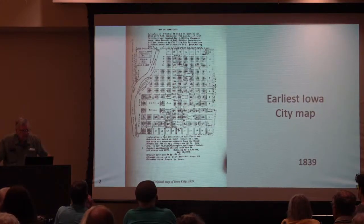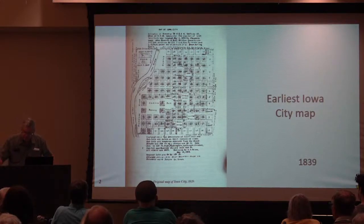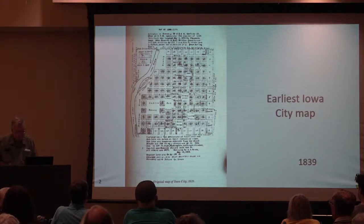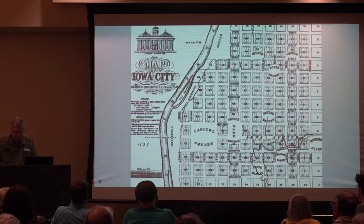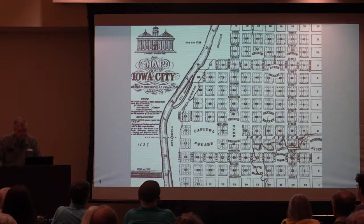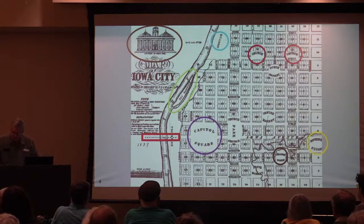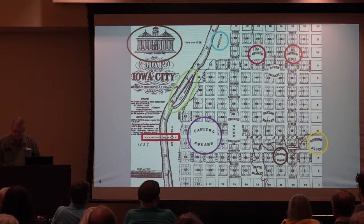The widest street was to be Iowa Avenue at 120 feet, and it still is the widest street in certainly all of the downtown and beyond. Here's another rendition of the 1839 map. Two churches that I've circled in red were envisioned on Church Street, but no churches were ever built on Church Street — though that's an appropriate name for it anyway.